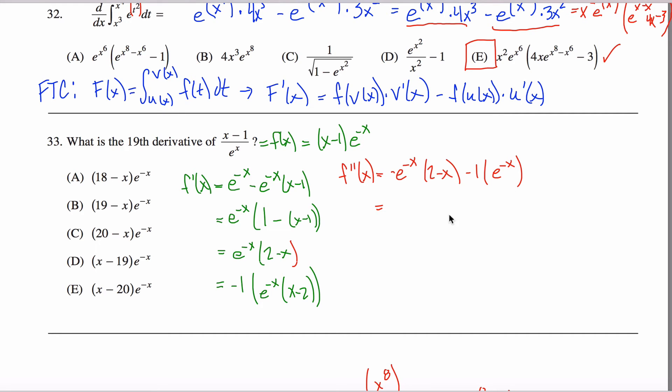And if I factor out an e to the negative x, what I have left is negative 2 minus x minus 1. So, I have e to the negative x times, let's see my x turns positive, I got minus 2 minus 1 more, I got minus 3.